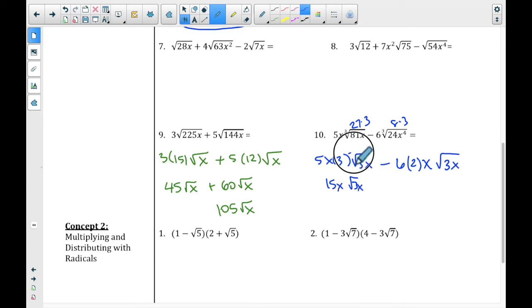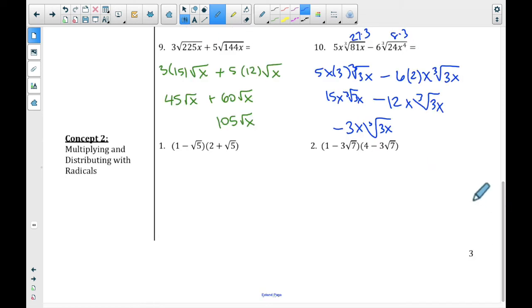Minus 12x cube root of 3x. So our answer is negative 3x, because 15 minus 12 is negative 3. And then we have a cube root of 3x. All right, that's adding and subtracting. You have to have like terms. If you don't have like terms, take a second, simplify it, because you might have like terms even though you don't know it.